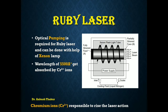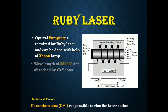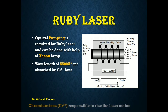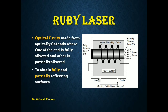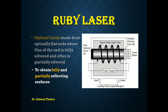Optical pumping is generally achieved with the help of a xenon lamp. The wavelength of 5500 angstroms is sufficient to excite the chromium ions to produce the laser action.